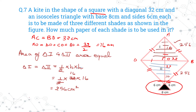So 256 cm² of paper will be used for triangle ABD and 256 cm² for triangle BCD. For the black triangle, we do not know the height, so we will use Heron's formula. Write down Heron's formula: Area = √(S × (S−A) × (S−B) × (S−C)).